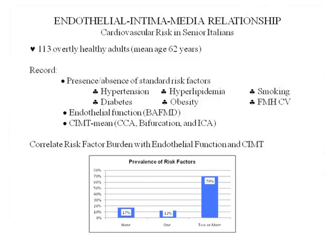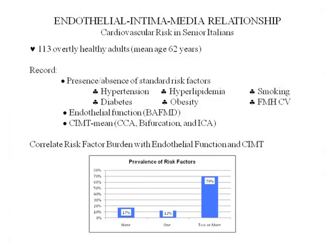Now let's look at the relationship between the endothelium and intima-media thickness from the Cardiovascular Risk in Seniors Italian study. You take 113 overtly healthy middle-aged or senior Italians, average age 62. You record the presence or absence of standard risk factors — blood pressure, diabetes, lipids, overweight, smoking, family history, cardiovascular disease. You measure endothelial function using brachial artery flow-mediated vasodilatation and intermediate thickness — a composite mean thickness of the common carotid, the bifurcation, and the internal carotid.